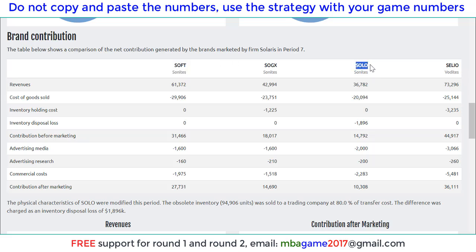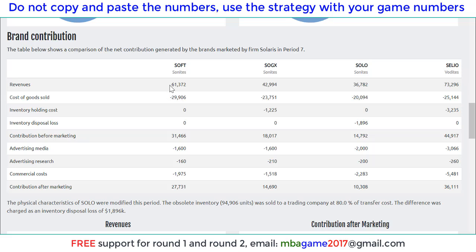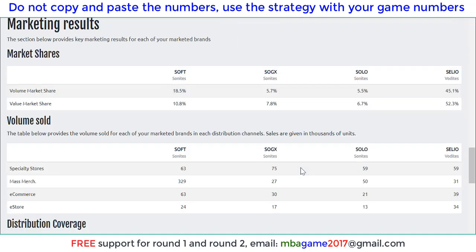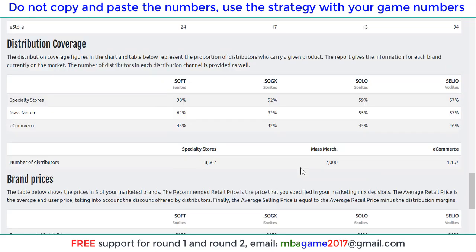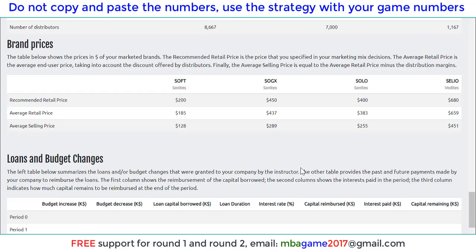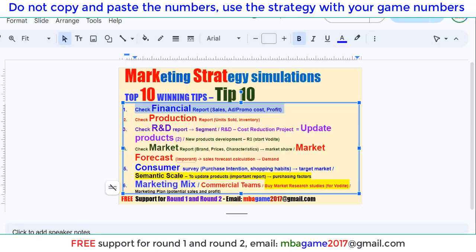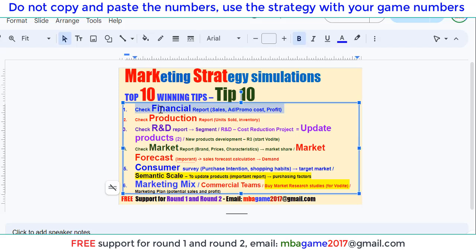We start with two products and then develop a new product. You can see the contribution of each brand, the sales of each brand, and also the contribution after marketing. This helps us see which product brings more sales growth and more profit so we can invest more in that. Remember to check market demand growth and develop a new product as early as possible to gain the advantage. So the first thing to look at in Marketing Strategy simulation is to check the financial report.